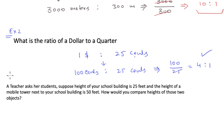Let's take one more example. In this, a teacher asks her students: suppose the height of your school building is 25 feet, and the height of a mobile tower next to your school building is 50 feet. So we'll write down as we are reading the statement.